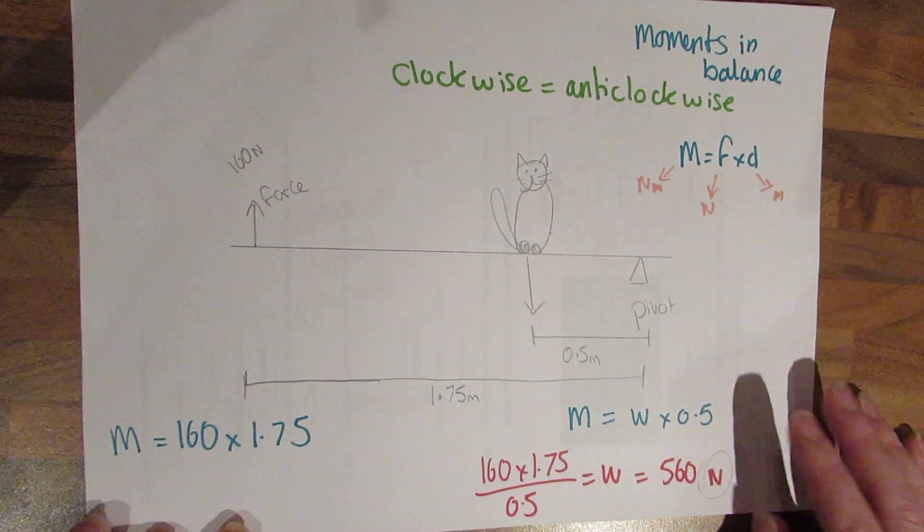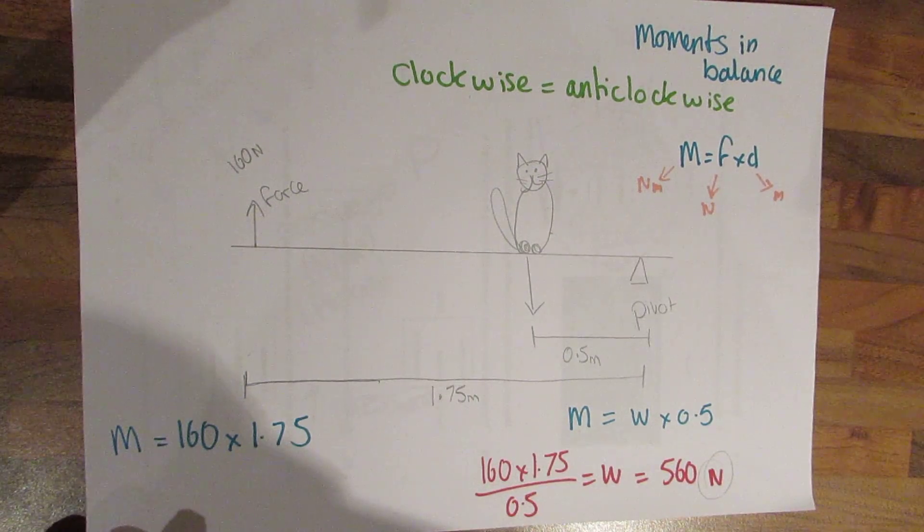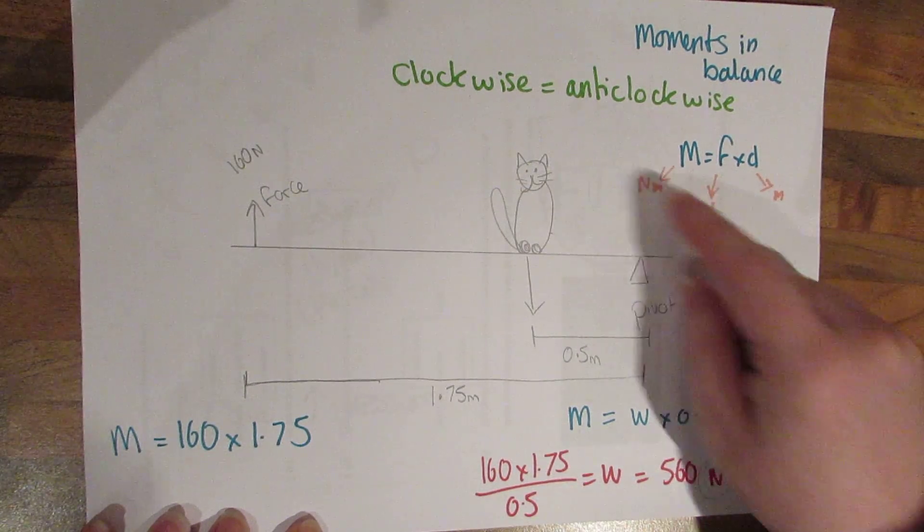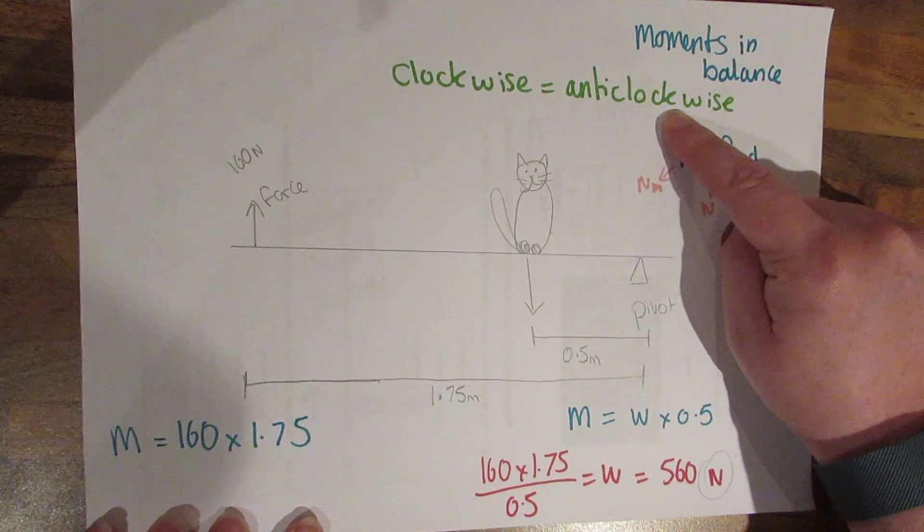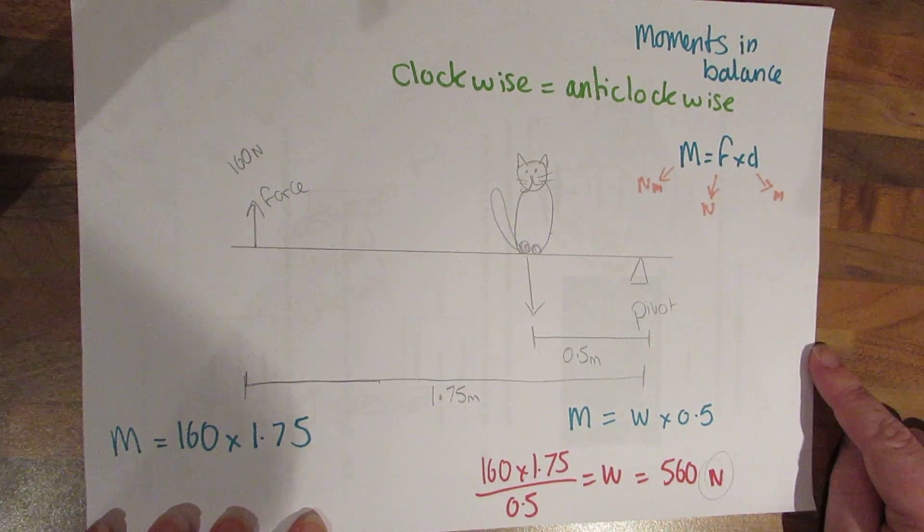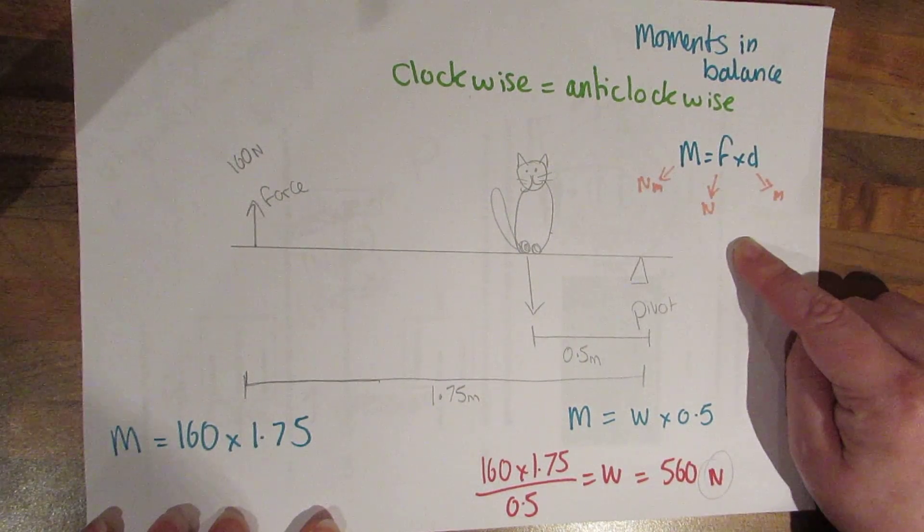Here we have a moment that's in balance, exactly the same maths here, it's just slightly more complicated. So you need to know that the clockwise moment is going to be equal to the anticlockwise moment if something is in balance. Same equation that we used before.